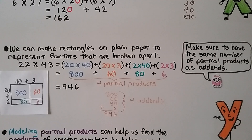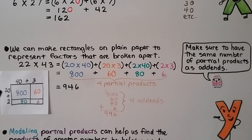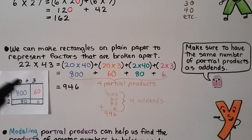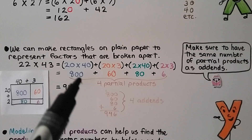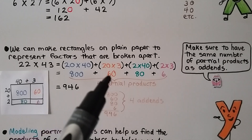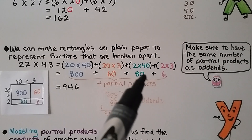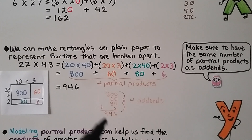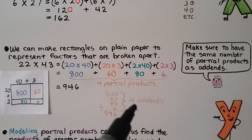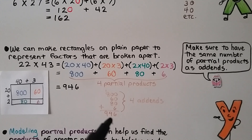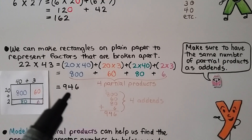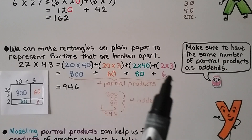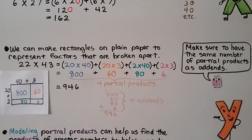We can make rectangles on plain paper to represent factors that are broken apart — you don't need grid paper. We have 22 times 43. We break the 22 into 20 plus 2 and the 43 into 40 plus 3. We have 20 times 40 (800), 20 times 3 (60), 2 times 40 (80), and 2 times 3 (6). We add our 4 partial products and get 946. 22 times 43 equals 946. We must make sure we have the same number of partial products as add-ins — you don't want to miss one.